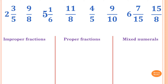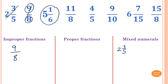Please stop the video and write down these numbers — which ones are improper fractions, proper fractions, and mixed numerals? 2 and 3 fifths is a mixed numeral. 9 over 8 — the top number is larger than the bottom, so this is an improper fraction. 5 and 1 sixth is a mixed numeral. 11 over 8 — 11 is bigger than 8, so it's an improper fraction.